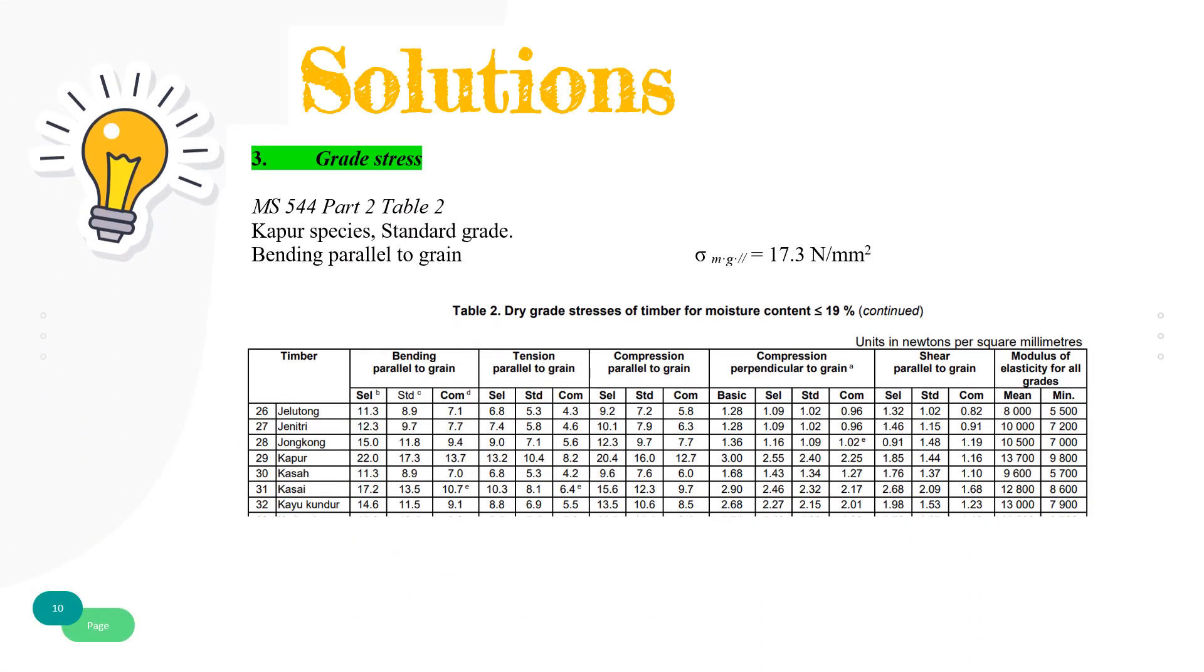Grade stress for Kapur species, standard grade, and bending parallel to grain is referred to Malaysian Standard Table 2, which is dry grade stresses of timber for moisture content less than 19%. The value is 17.3 N per millimeter square.